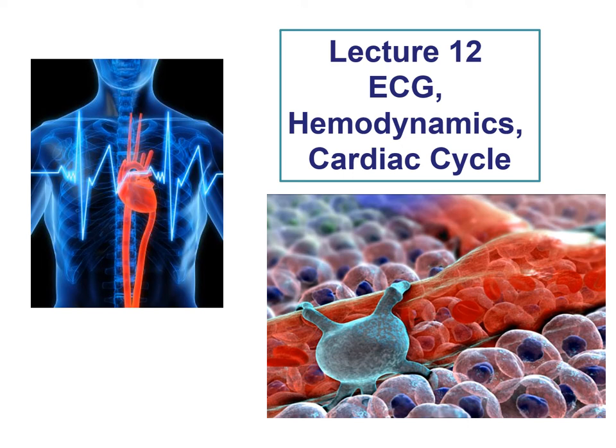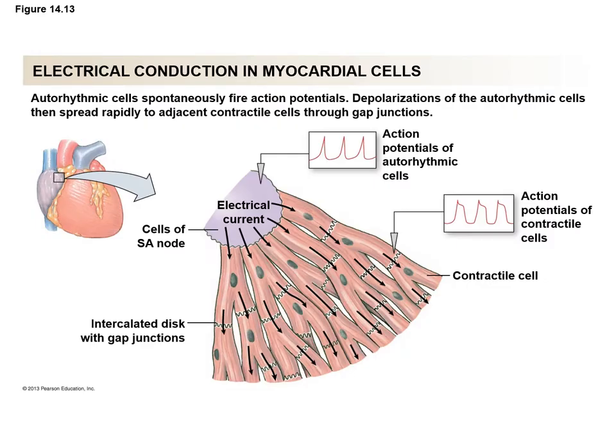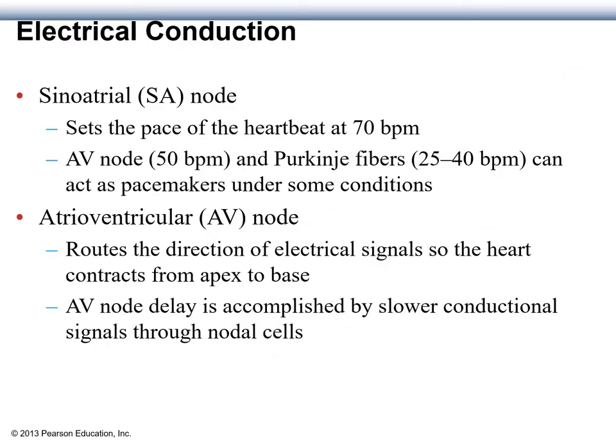This is Lecture 12 for Biology 178, covering ECG or electrocardiogram, hemodynamics, and the cardiac cycle. We're going to begin with a review of the electrical conduction system of the heart. It starts with the pacemaker, the sinoatrial or SA node. It generates an action potential that propagates through the myocardial cells. The SA node sets the pace of the heart at about 70 beats per minute. The atrioventricular node is going to route the direction of electrical signals from the SA node down the heart to the apex, so that electrical signals travel from the apex towards the base. There's also going to be a delay in this system accomplished by a slower conduction signal through the nodal cells.